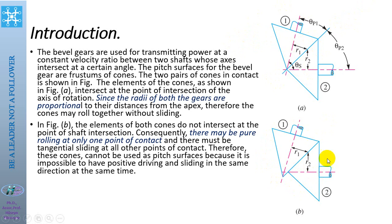Since the radii of both gears are proportional to the distance from the apex point, the cones may roll together without sliding. But in this figure, the apex point of the cones does not coincide with the intersection point of the shafts, and the radii of the cones at the contact point are not equal — not proportional — so there may be poor rolling at only one point of contact.